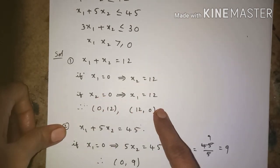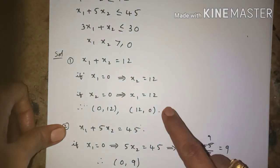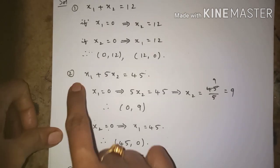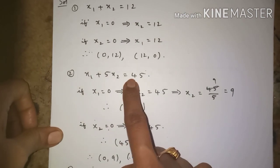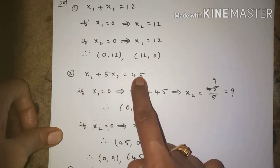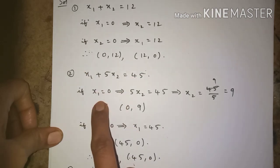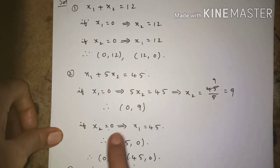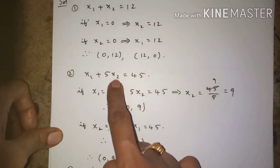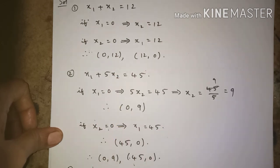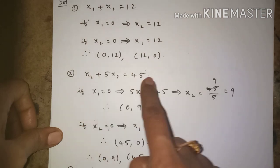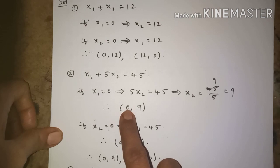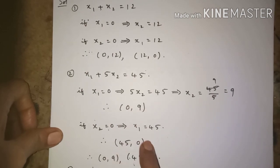Using the first constraint, we get the points (0, 12) and (12, 0). Now take the second constraint in equation form: x1 plus 5x2 equals 45. If x1 equals 0, you get 5x2 equals 45, so x2 equals 9. If x2 equals 0, you get x1 equals 45. So using the second constraint, we get the points (0, 9) and (45, 0).